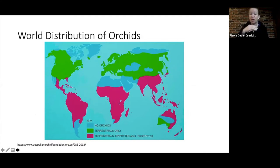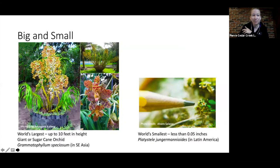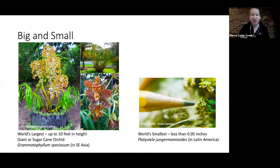Here in the United States we only have terrestrial orchids in the wild. Orchids are found throughout the world — the only place they're not found is Antarctica. They can come in many different shapes and sizes: the world's largest reaches up to 10 feet in height, while the world's smallest is just 0.05 inches.